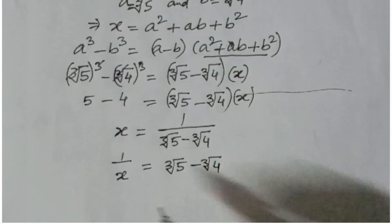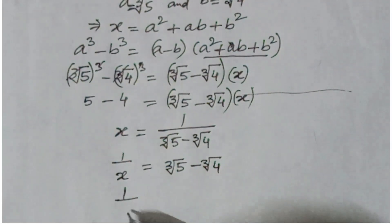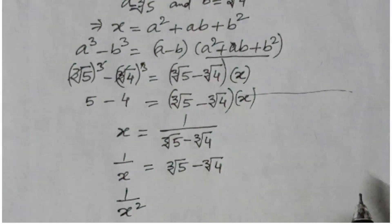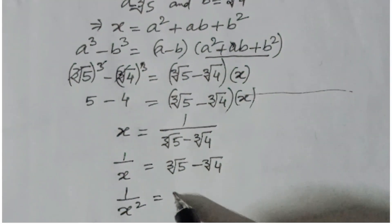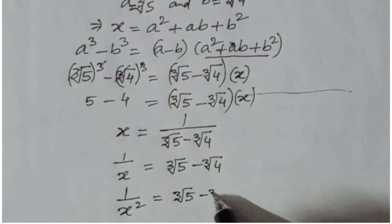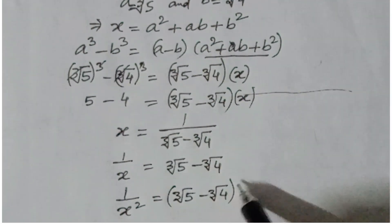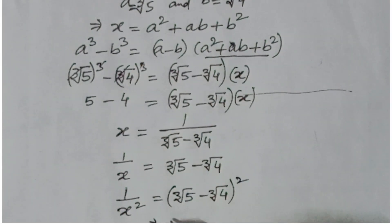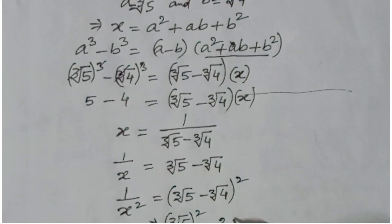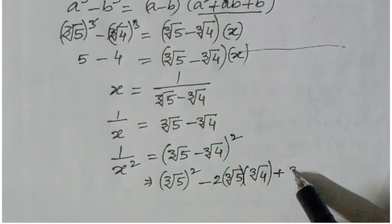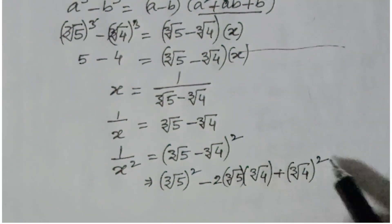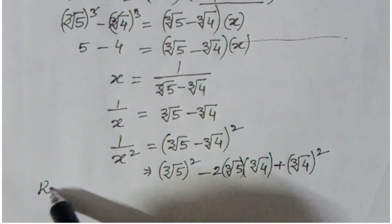In the problem we need to find the value of x minus 1 over x squared. So 1 over x squared equals (cube root of 5 minus cube root of 4) whole squared, which expands to cube root of 5 squared minus 2 times cube root of 5 times cube root of 4, plus cube root of 4 squared.